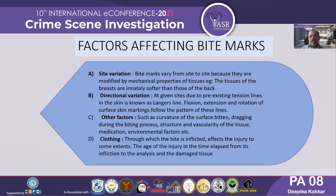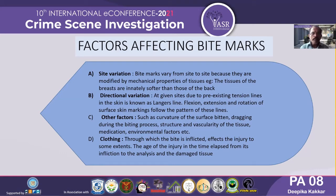Other factors include how the surface has been bitten, how much dragging occurred during the biting process, the structure and elasticity of the tissue, any medication applied to it, and environmental factors. A fourth factor is clothing — when a bite mark is inflicted through clothing, it affects the injury to some extent. The age of the injury and the time elapsed from infliction to analysis also affect the damaged tissue.